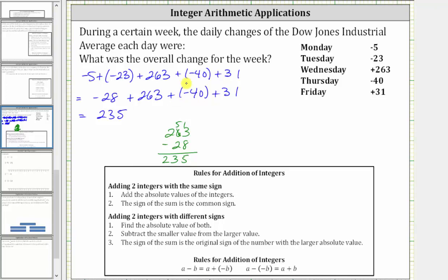And then we have plus negative 40. Remember, adding a negative is equivalent to subtracting a positive. Let's write plus negative 40 as just minus 40. And then we have plus 31. 235 minus 40 is equal to 195. And 195 plus 31 is equal to 226.